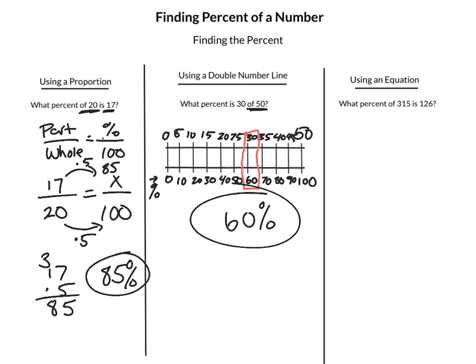Now we are going to do it with an equation. What percent of 315 is 126? So what percent, we don't know, we're going to use x, of 315 is 126. We're just putting things into that equation we talked about in the last slide, where we take the percent as a decimal times the whole equaling the part. Now, we want to solve for x in this case. We draw that line if we need to, and then we undo what's being done to the variable. In this case, we're going to divide both sides by 315.